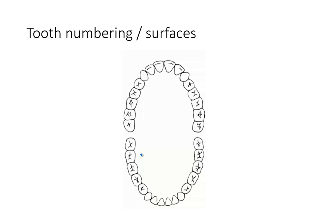In the universal numbering system, each tooth gets one number. You start in the upper left at number one, it goes over to 16, then number 17 for the lower left, over to the lower right at 32. The easiest way to remember it is to commit to memory the first and last tooth in each quadrant. One and 16 are the first and last in the upper arch. The centrals are eight and nine. In the mandible, it's 32 and 17, and the mandibular centrals are 24 and 25.